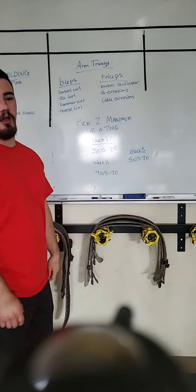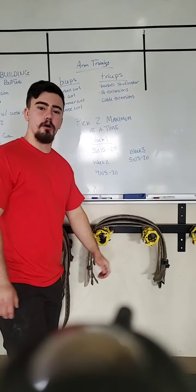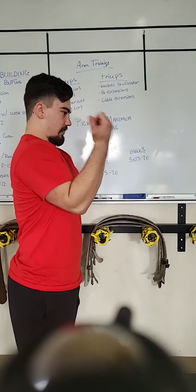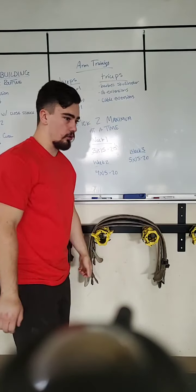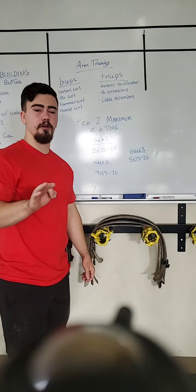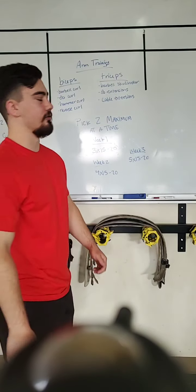For the biceps, the big staple is the barbell curl. Take a normal bar, curl up like this, go nice and slow and controlled. That's going to be the biggest mass builder you're going to be able to do for your biceps.